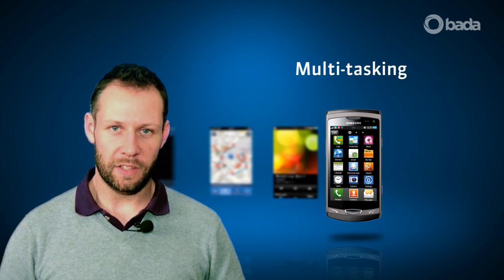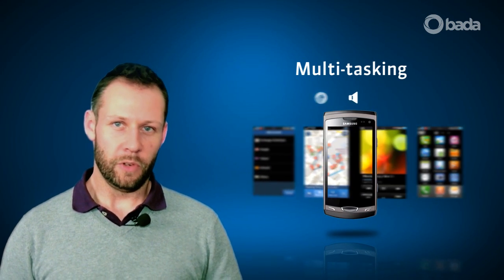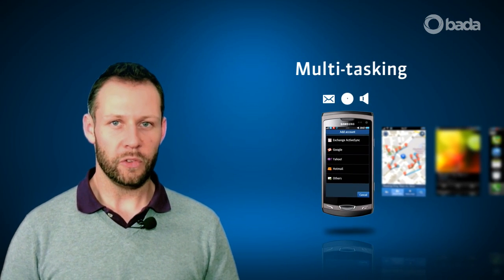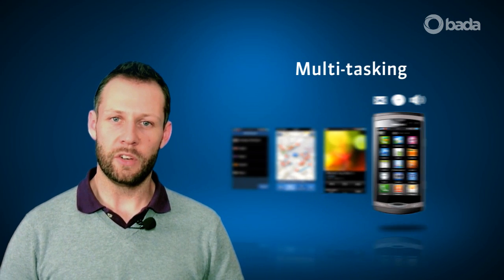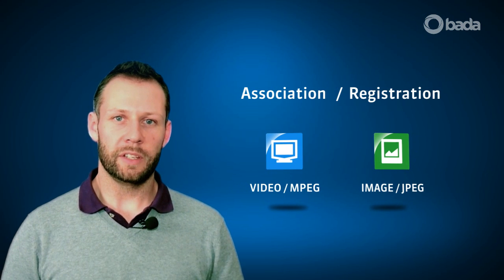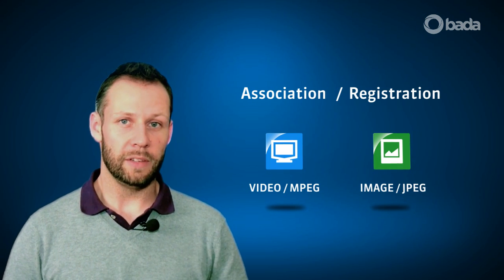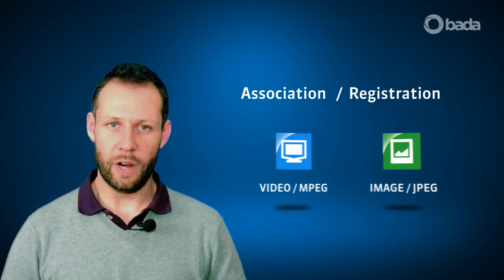In Bada 2.0, we introduced multitasking. So several Bada apps can run at the same time. For example, your music player can keep playing your favorite songs while you check your email, or you could surf the web while you listen to internet radio. In addition, a Bada 2.0 app can also be associated with particular content types like pictures or music files. This association is registered by using MIME types or URIs.